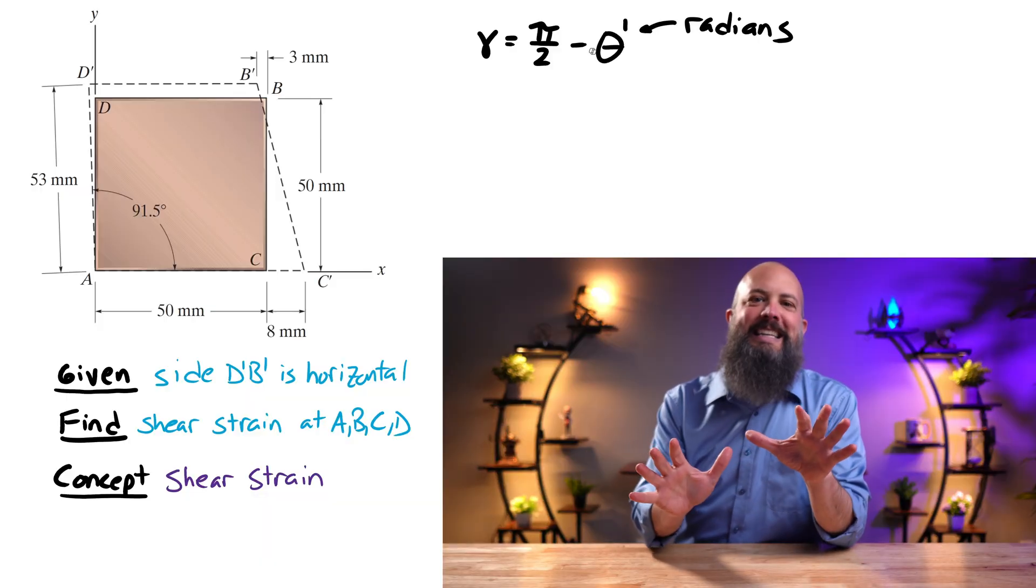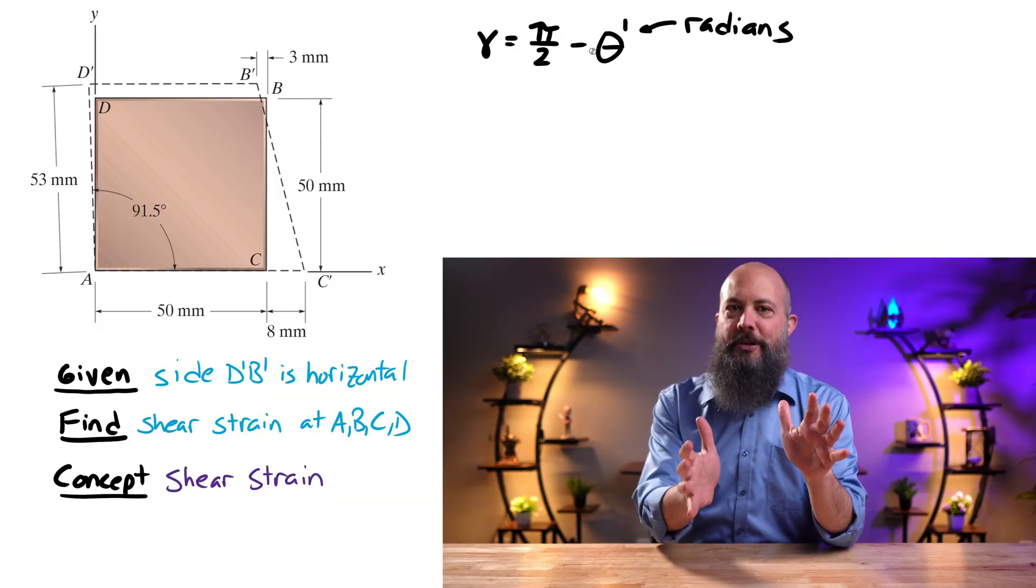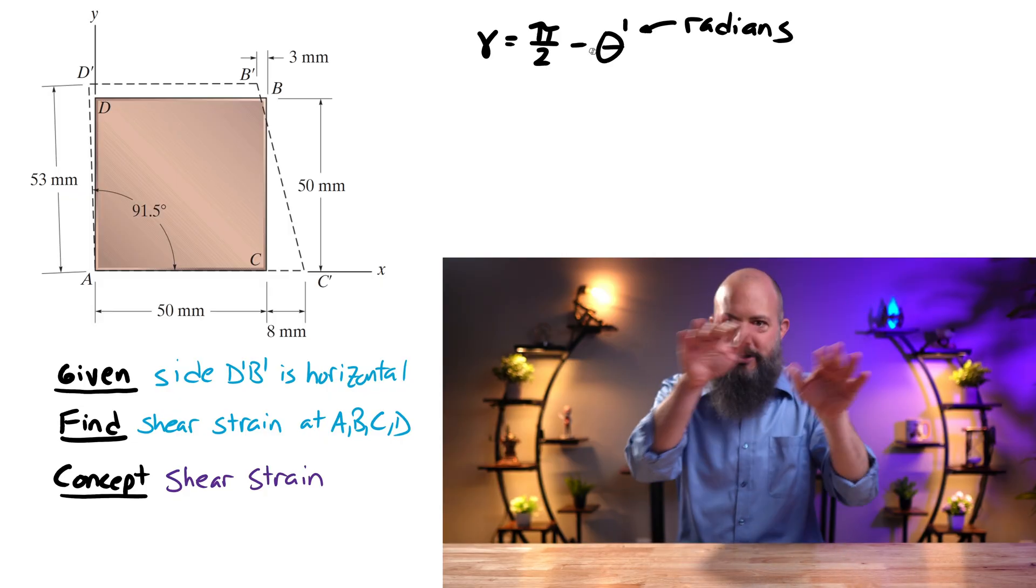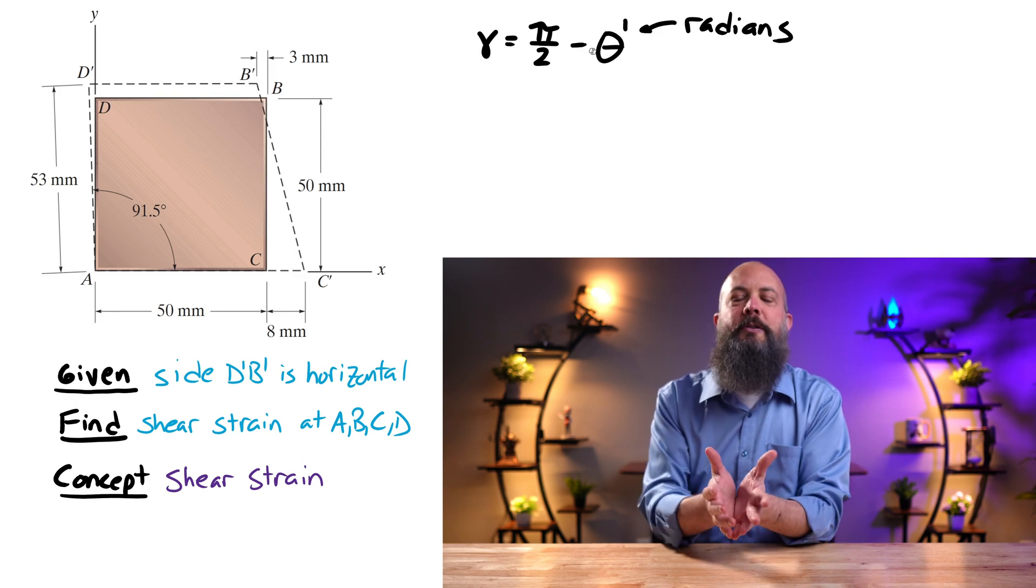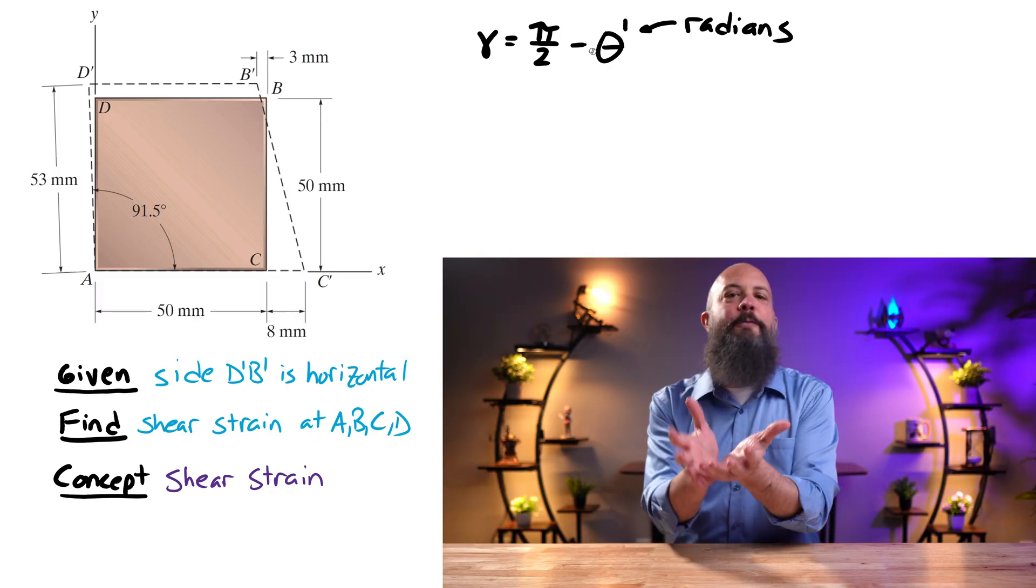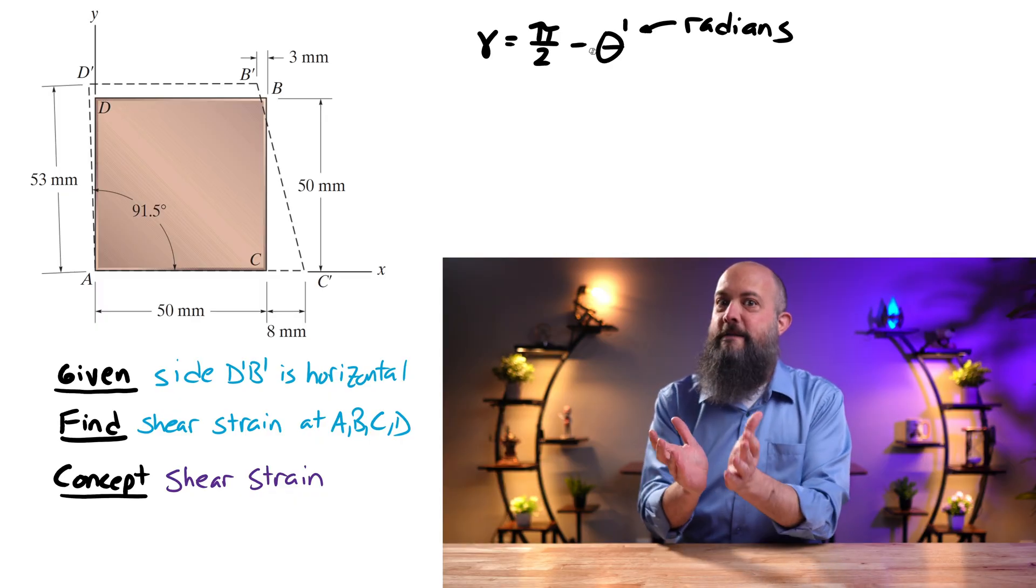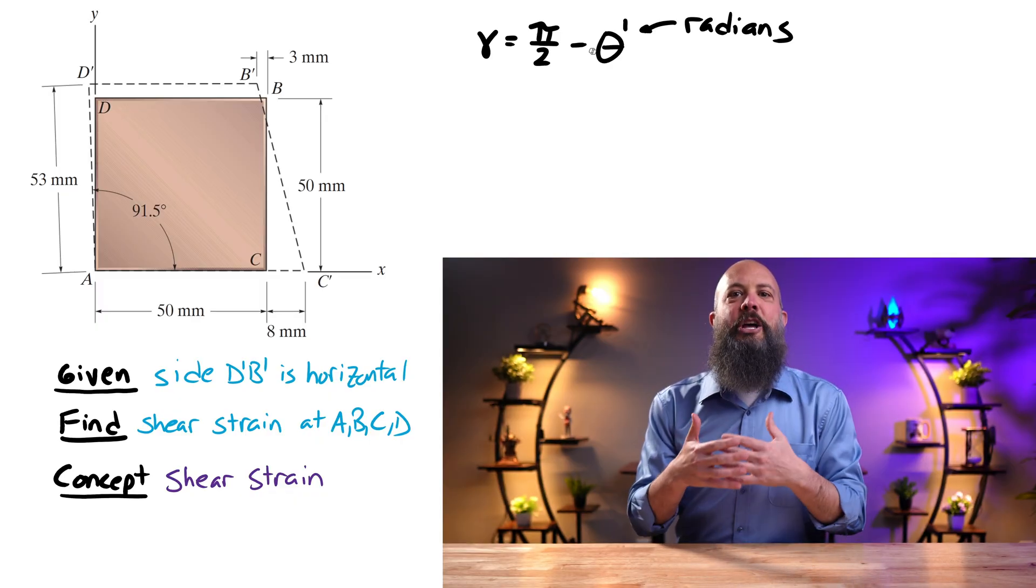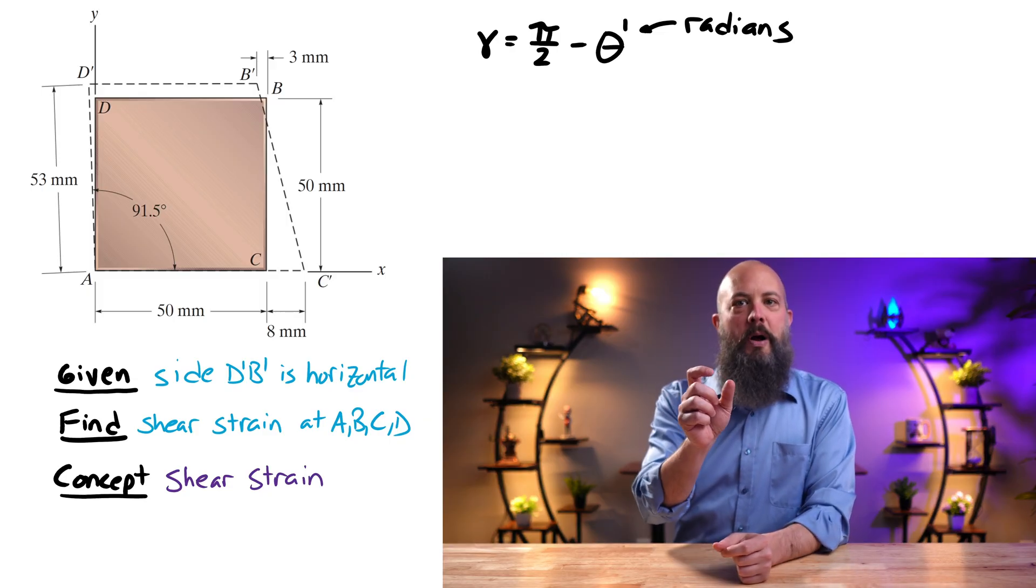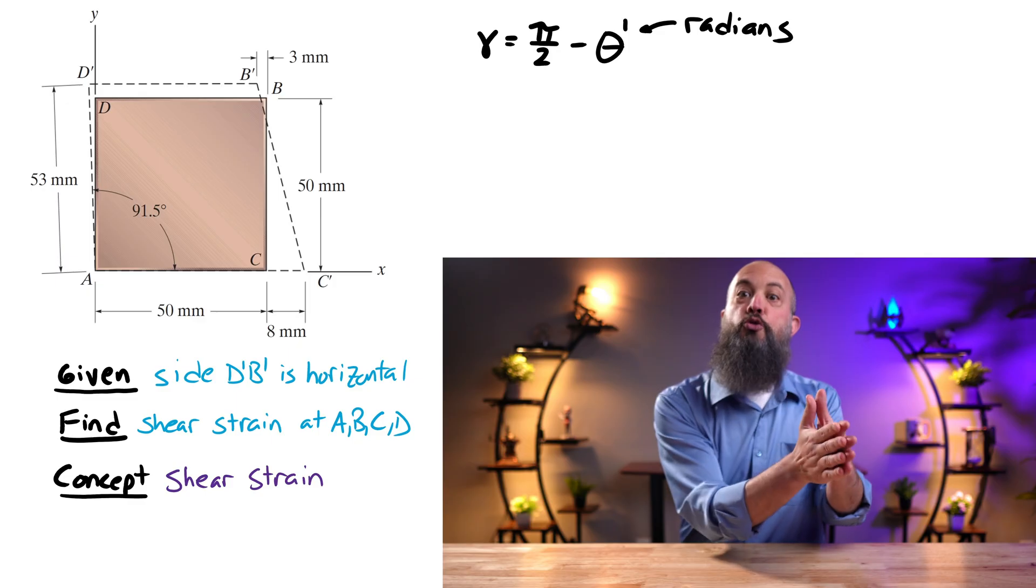Serenity, calm down. What you need to find is the new angle at each of these four corners. Originally, it's 90 degrees, right? It's just a regular box, regular rectangle. And after it becomes deformed, you might get different angles. So just find the new angle, and shear strain is pi over 2 minus the new angle.